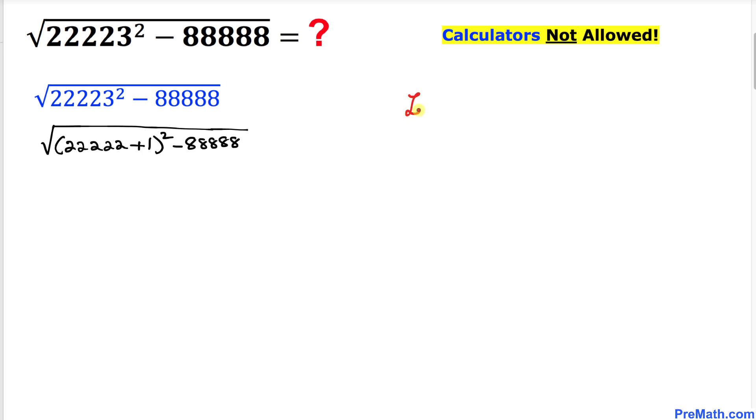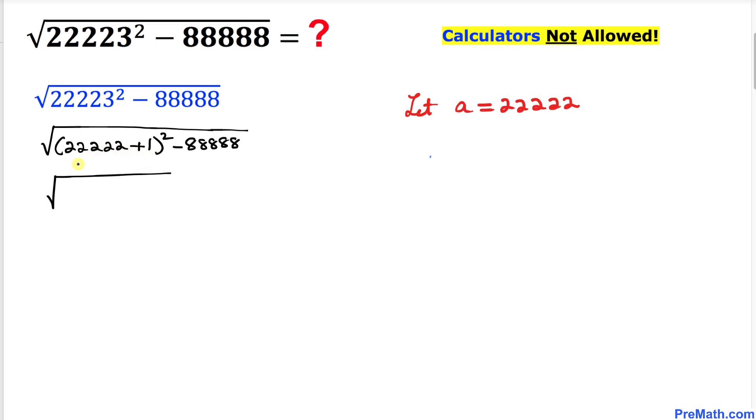Therefore let me go ahead and write: let A equals 22,222. So we can write this given problem as I'm going to replace this one by A, so this is going to become A plus 1 whole squared.